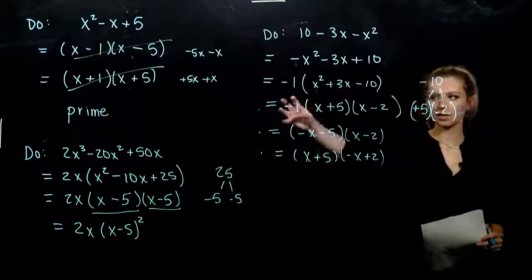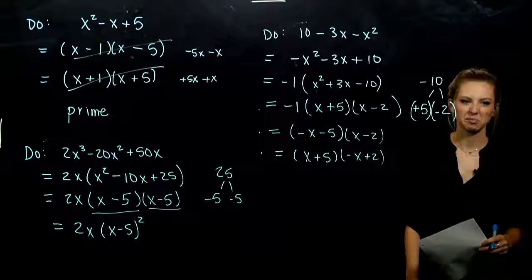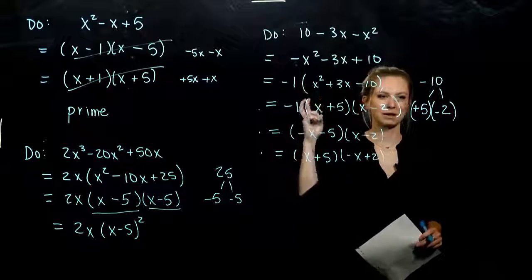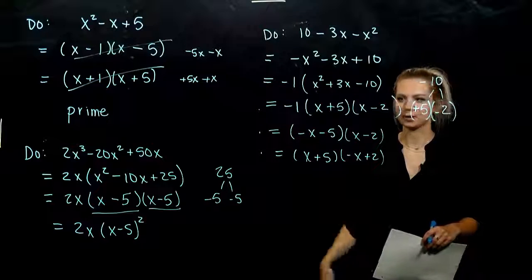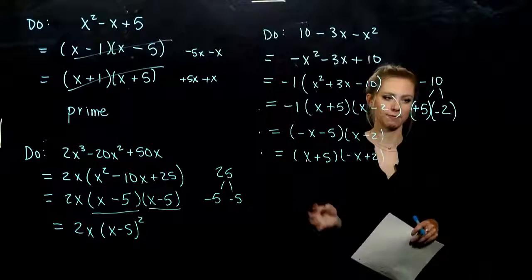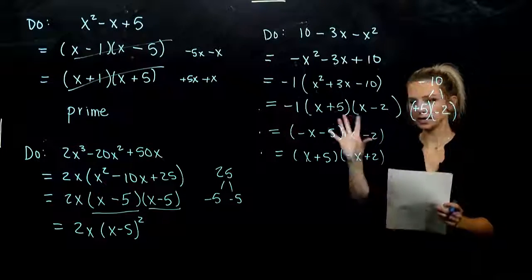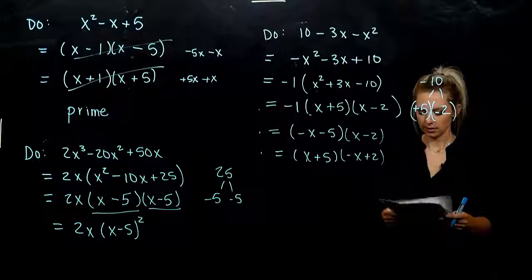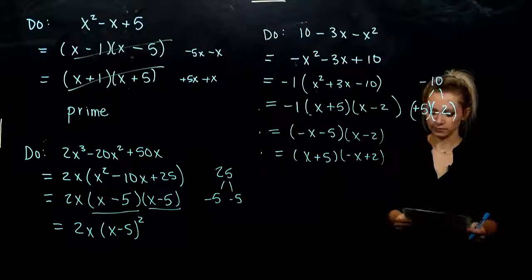The other option, we could have given it to the second pair. We kept the first one the same and had negative x plus 2. These are all equivalent, those three. Whichever one you're comfortable with, if you like leaving it on the outside, go with that. I'd say this is probably the most mathematically sound in terms of factoring, because we can't break it down any farther from there.